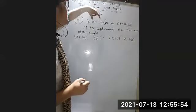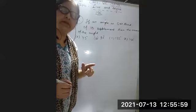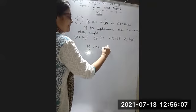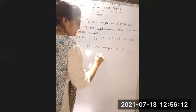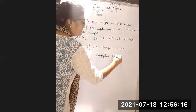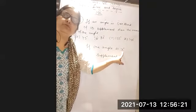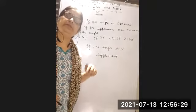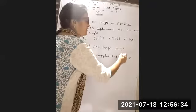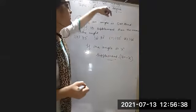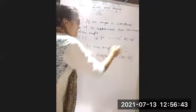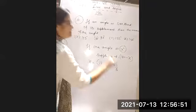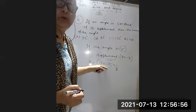What does supplement mean? If one angle is X degrees, then its supplement is 180 − X. The question says the angle equals one third of its supplement. So the equation is: X = (1/3)(180 − X). Multiplying both sides by 1/3 gives X = 60 − X/3.